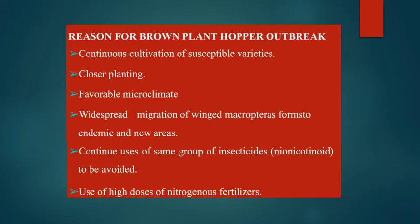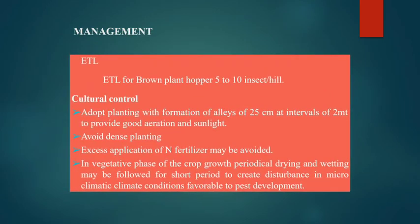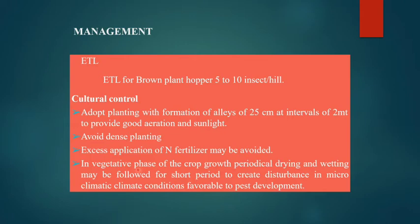Cultural control measures include adopting row planting with alleys of 225 cm at intervals of 2 meters to provide good aeration and sunlight, avoiding dense planting, and avoiding excess application of nitrogen fertilizers especially during the vegetative phase. Periodical drying and wetting of the field may be followed for short periods to disturb the microclimate conditions.